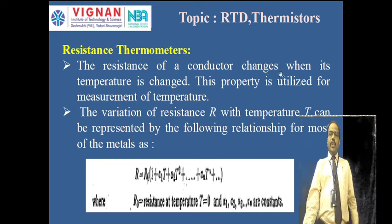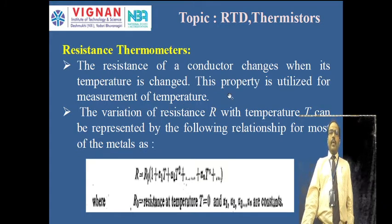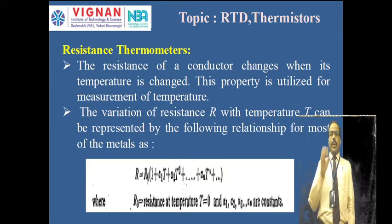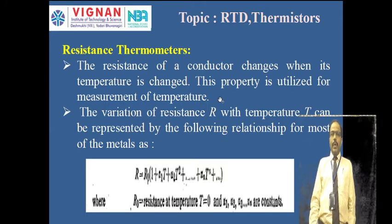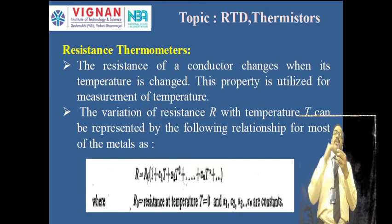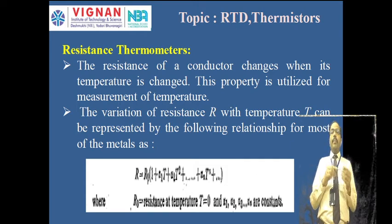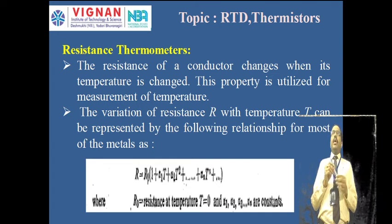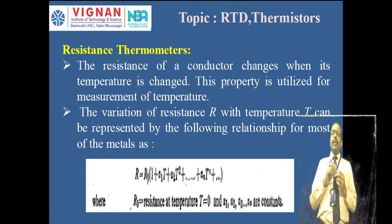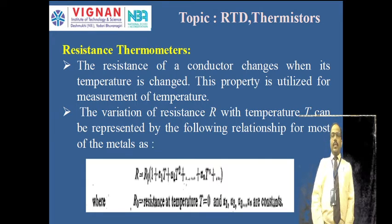The resistance of a conductor changes when its temperature changes, and this property is utilized for measurement of temperature. RTDs have a positive temperature coefficient of resistance — meaning as temperature increases, resistance also increases. This property in conductors can be used for measurement of temperature, and those devices are called resistance thermometers.